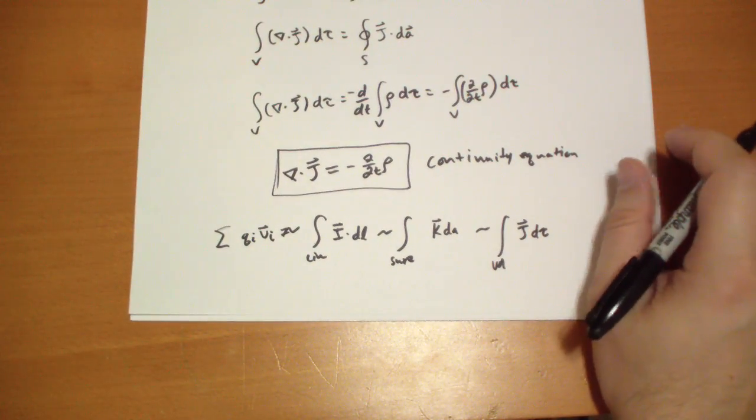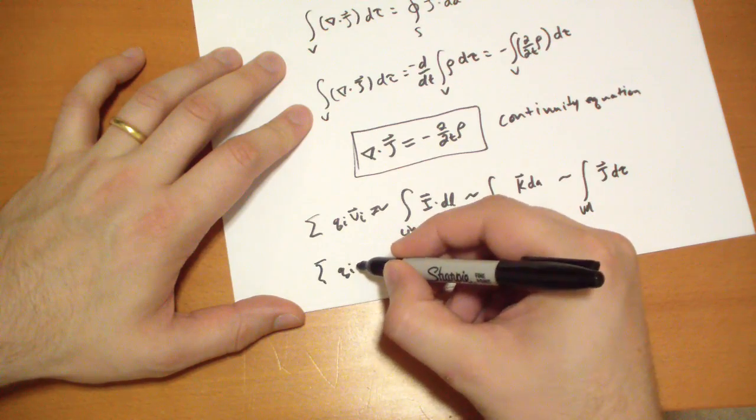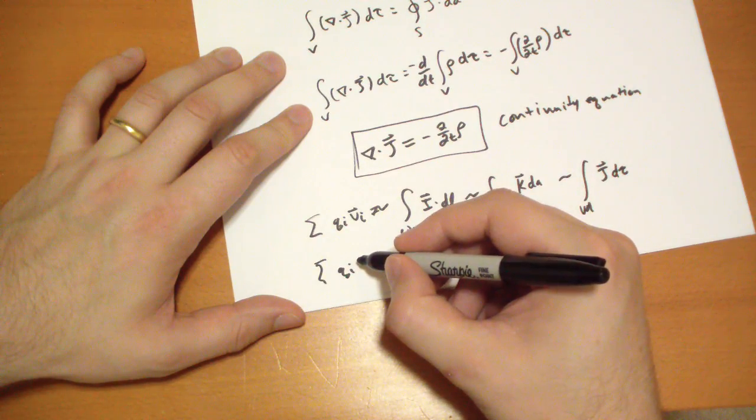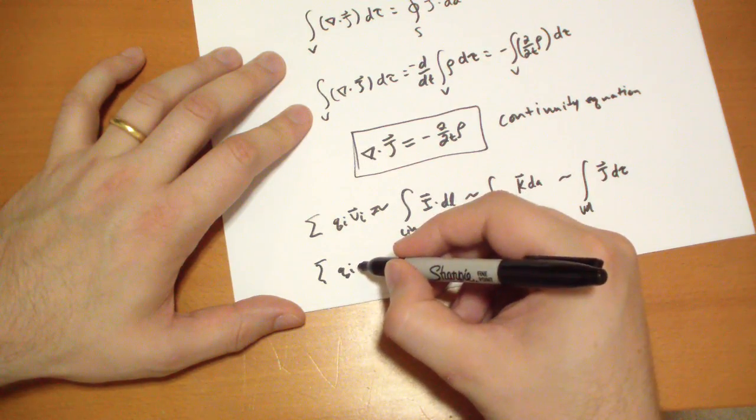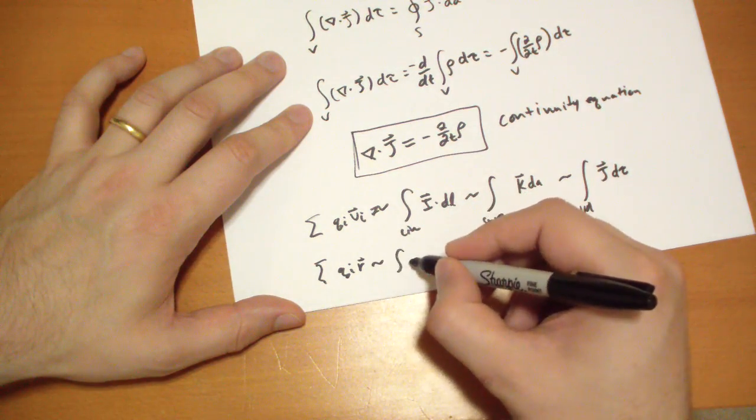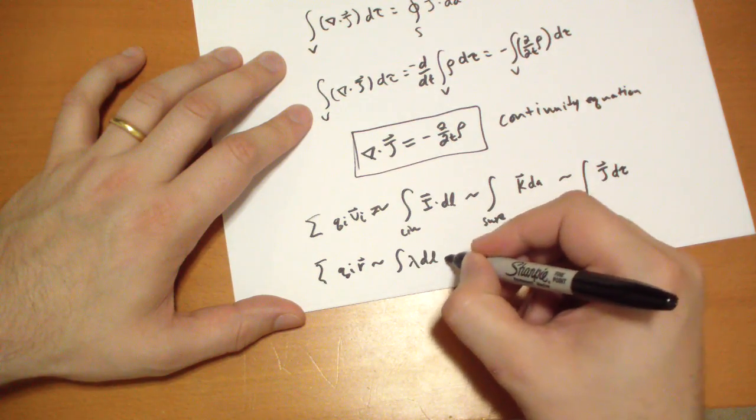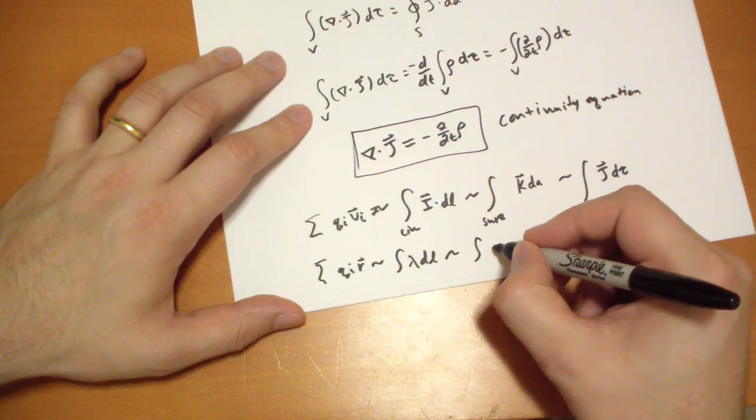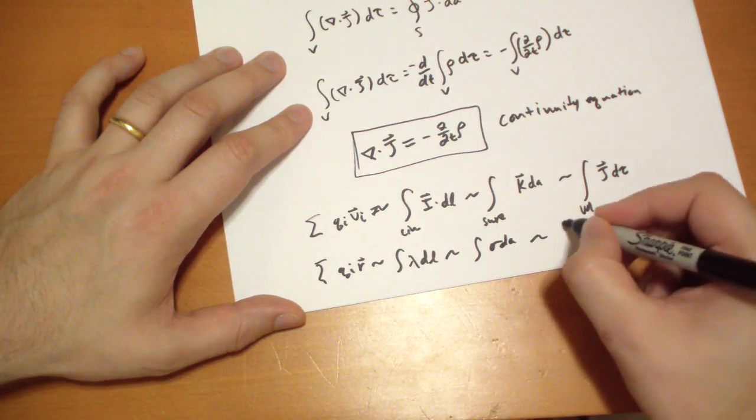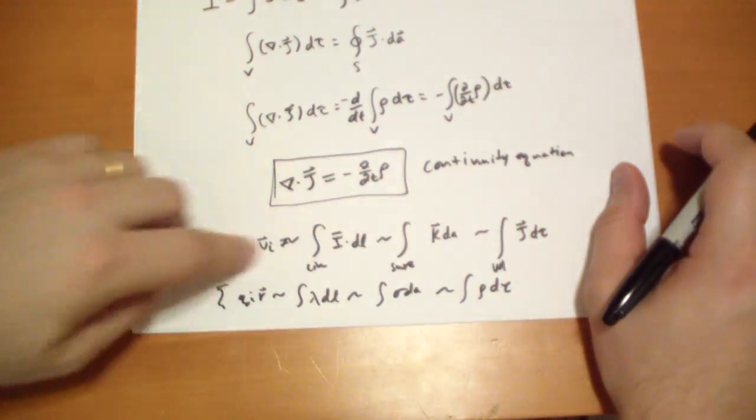This is similar to the equations we had in electrostatics, which was the sum of qi at position r. It's similar to line densities, and then we have surface charge densities, and then we have volume charge densities.